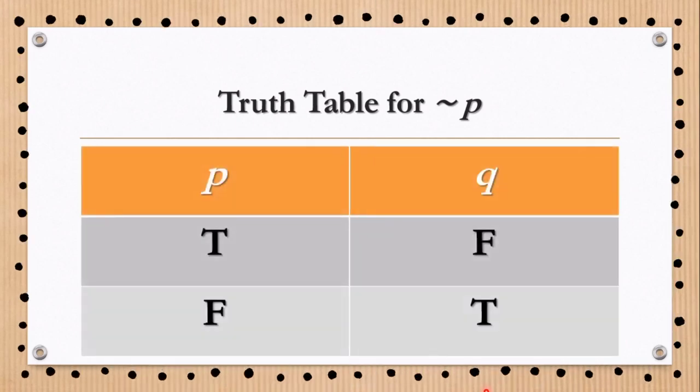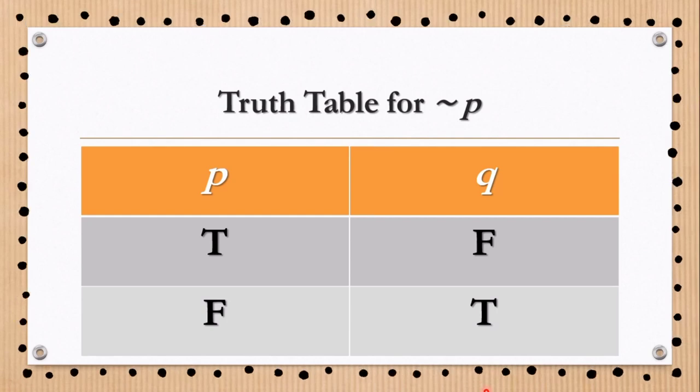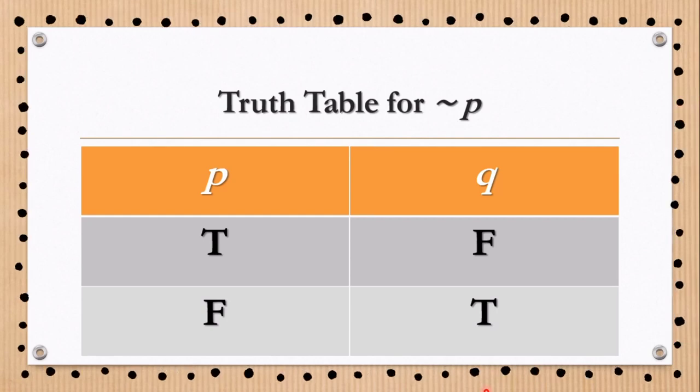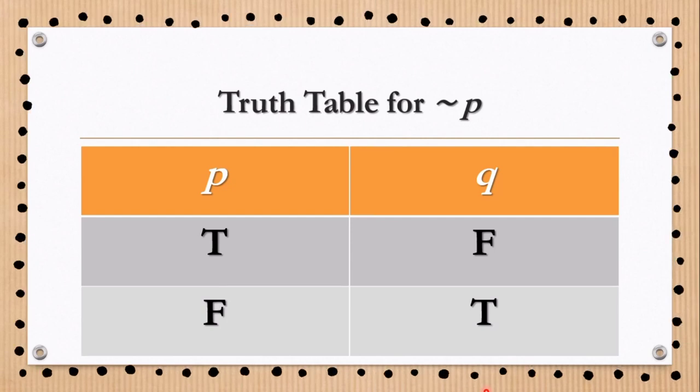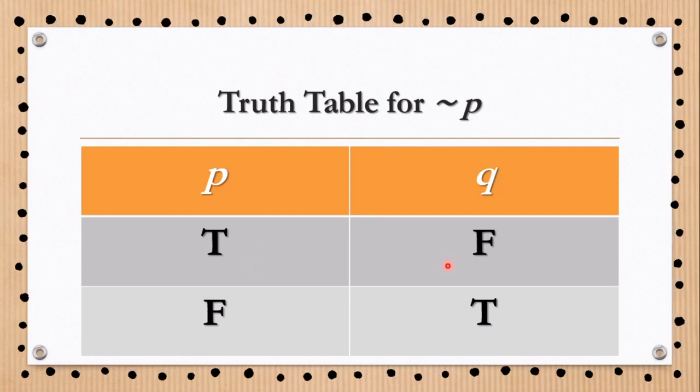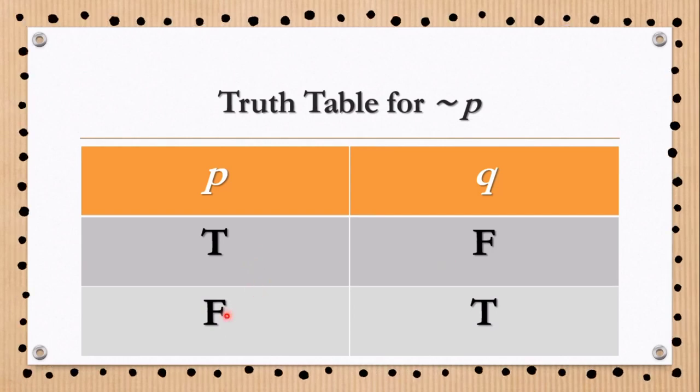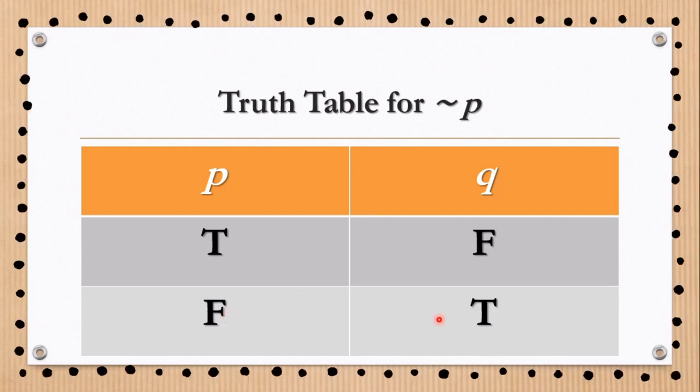In the table, the negation of a statement is the original statement. If proposition P is true, then its negation is false. If proposition P is false, then its negation is true, or vice versa.